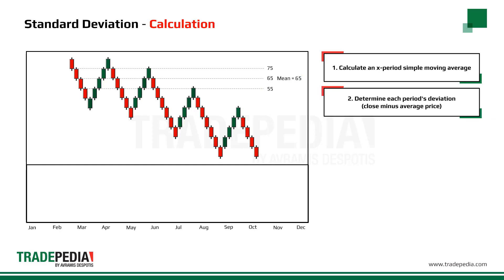The second step is to determine each period's deviation from this average. Our first close is 75 minus the average of 65, which results in 10. 65 minus 65 is 0. And our third point, 55 minus 65, results in negative 10.